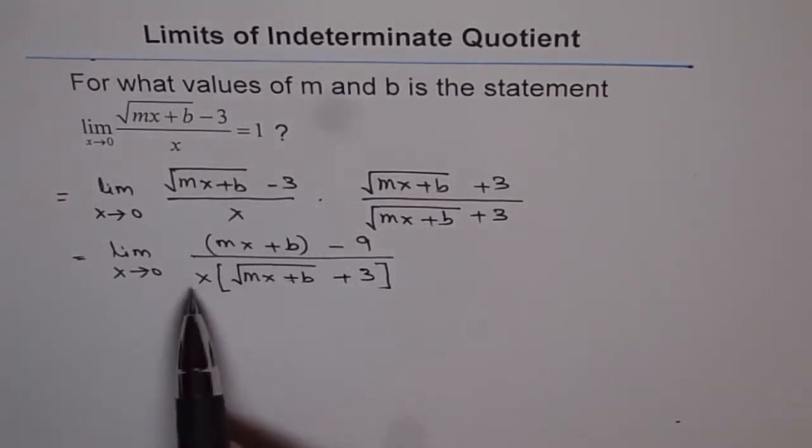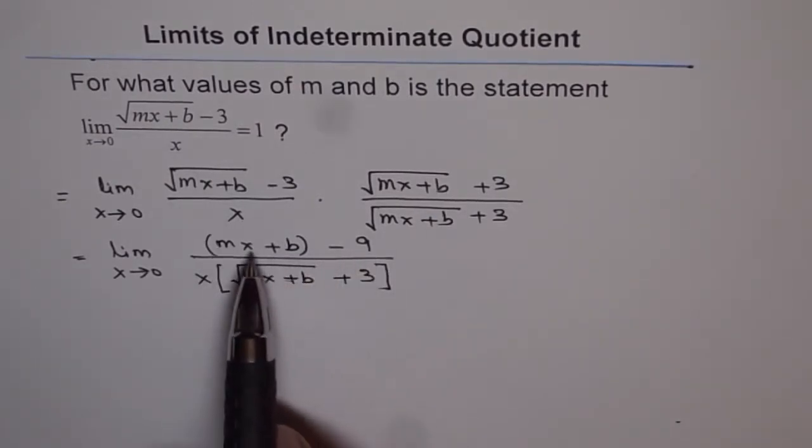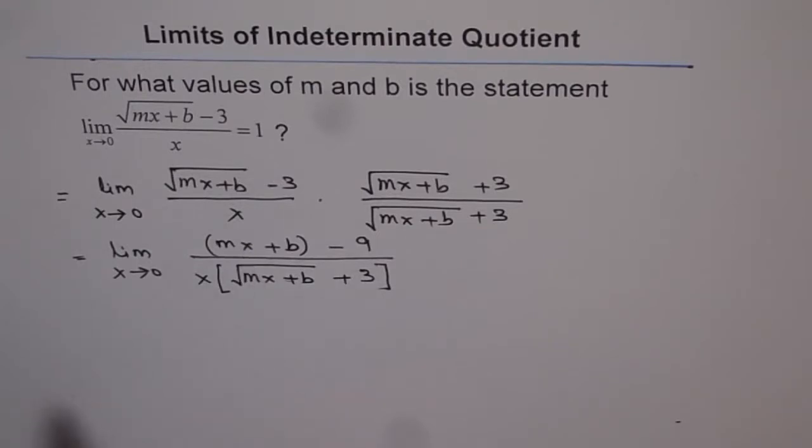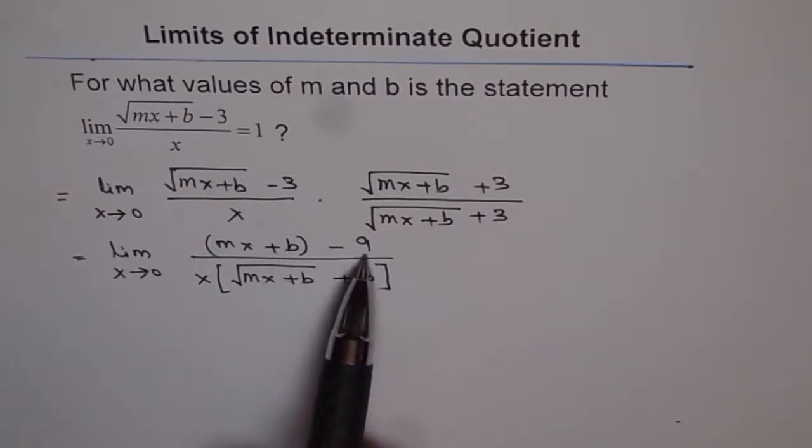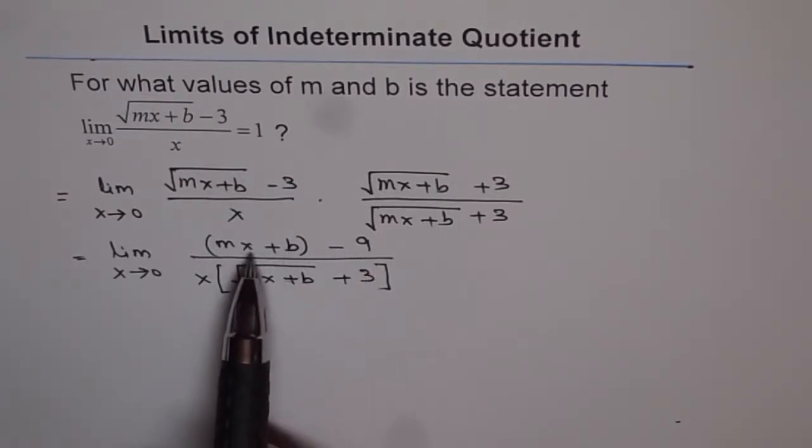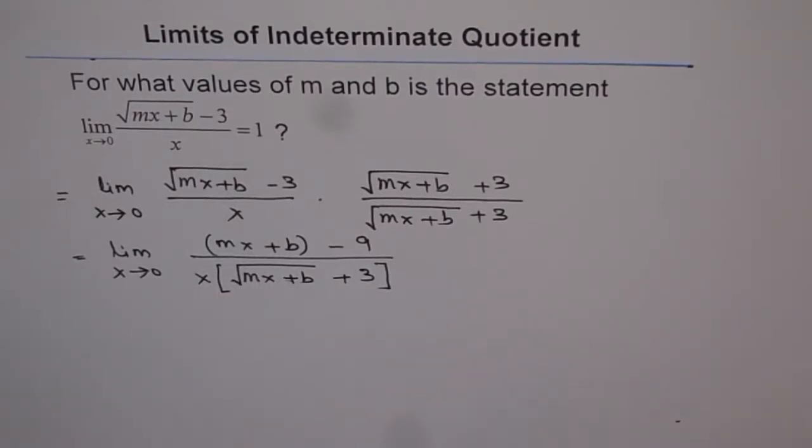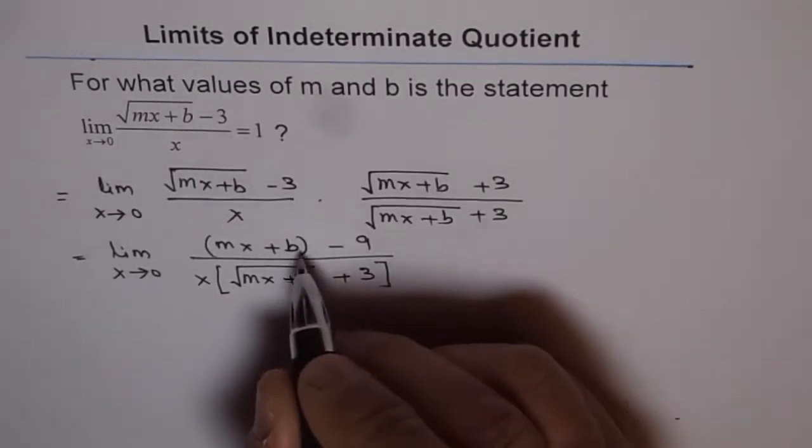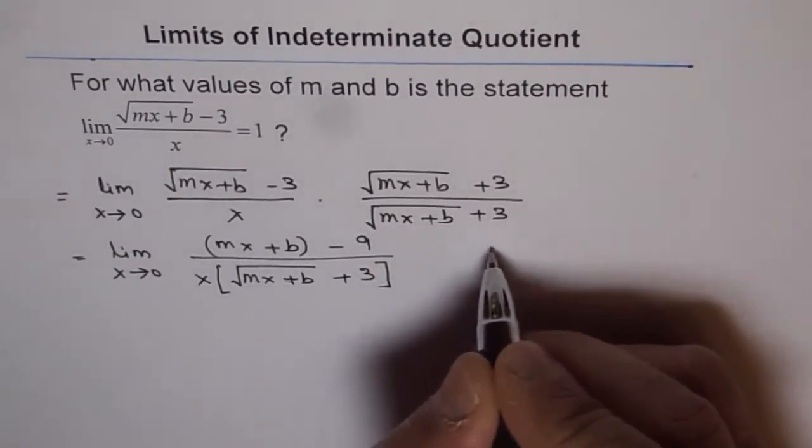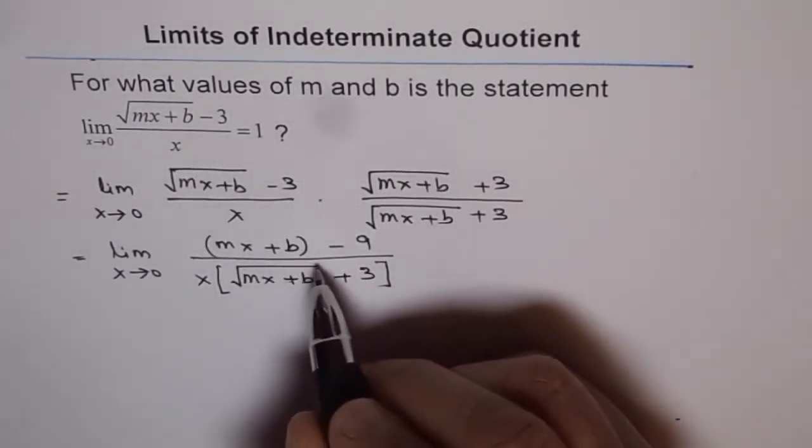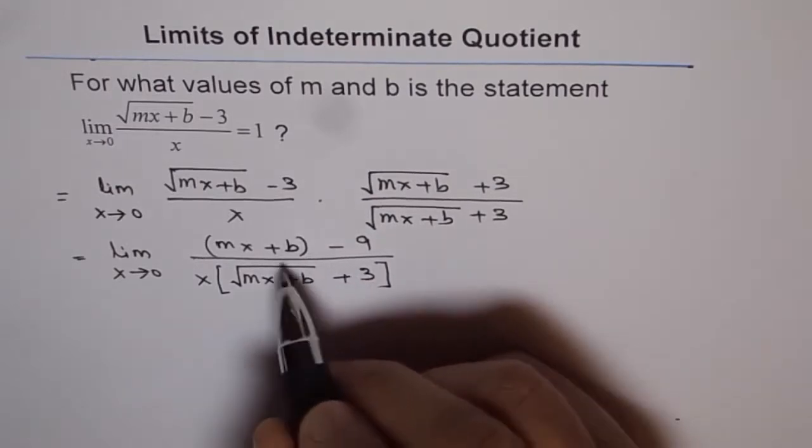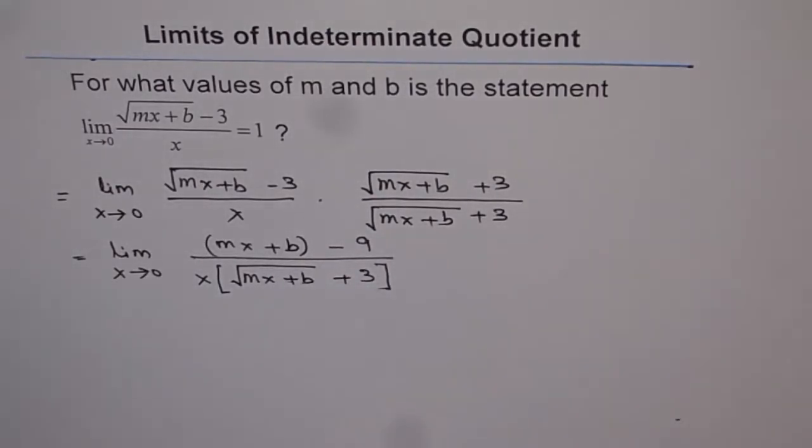Now, for this limit to exist, the numerator should be x. There should be x factored out from the numerator. Now, that is possible only if b is equals to 9. Do you see that? Then only we can get x. Now, therefore, we can conclude that b is equals to 9. So this implies, we are expecting x to be a factor of numerator now.